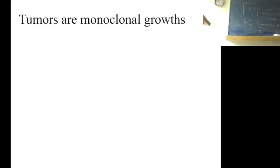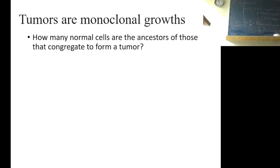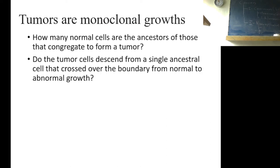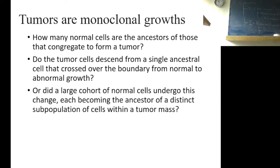Tumors are monoclonal growth. What are those tumors? Let's look at the structure of those tumors in a bit more detail. Tumors are monoclonal growth. What does it mean? How many normal cells are the ancestors of those cells that congregate to form a tumor? Do the tumor cells descend from a single ancestral cell that crossed over the boundary from normal to abnormal growth? Or did large cohort of normal cells undergo this change, each becoming the ancestor of distinct subpopulations of the cells within the tumor cells?